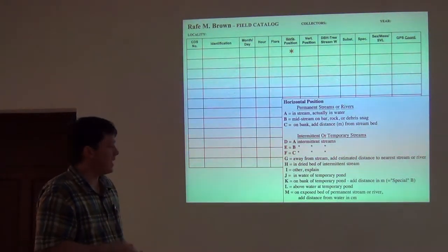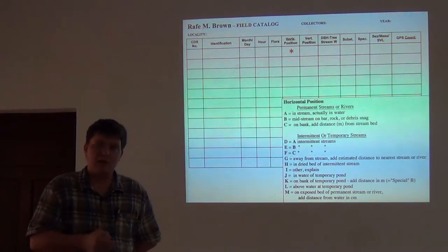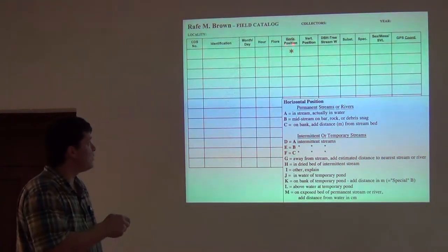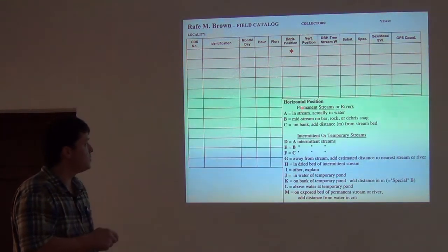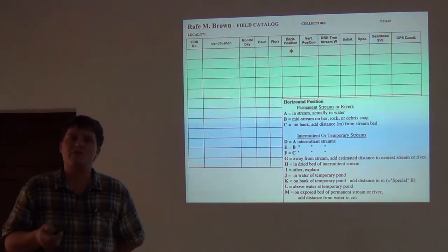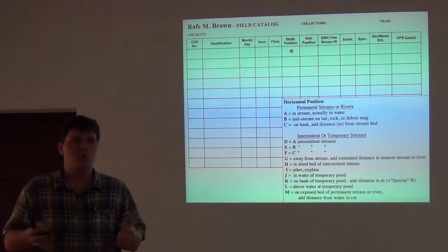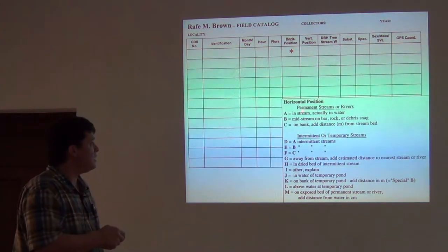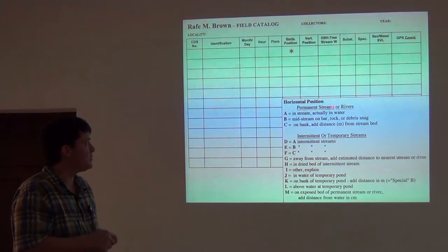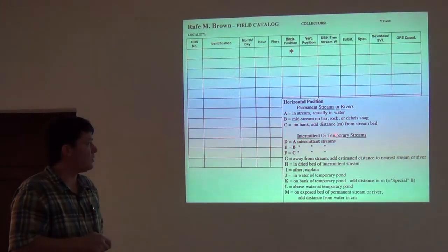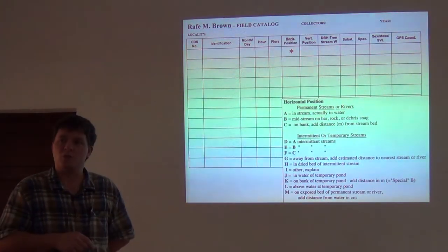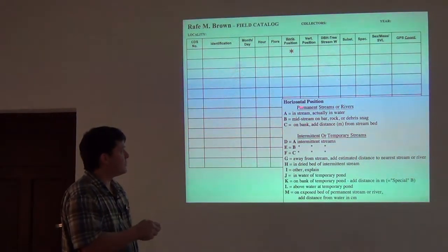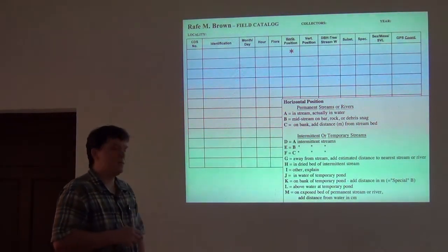Here we are at horizontal position. Bob Inger divided these up in a really clever way. He divided the horizontal position into — we often find amphibians and reptiles close to water for a variety of different reasons. So he very quickly identified permanent streams or rivers, or intermittent or temporary streams or rivers. With these codes, you can identify whether you're on a big river that's permanent or an intermittent stream.